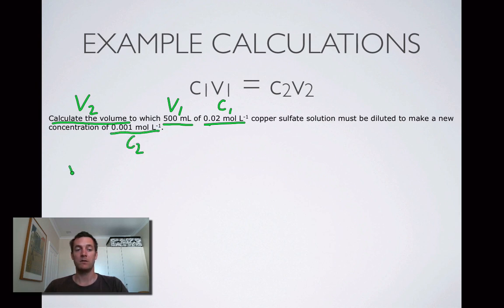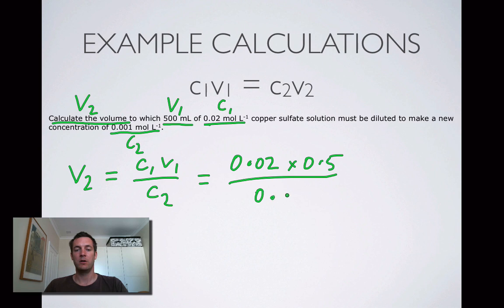What are we being asked to find? That's V2. V2 is here. Divide both sides by C2, we've got C1V1 over C2. What's C1? 0.02. What's V1? There it is, 0.5 liters. Divided by C2, which is 0.001. So that equals 0.01 over 0.001, and you can see that's 10 times bigger, so this equals 10.